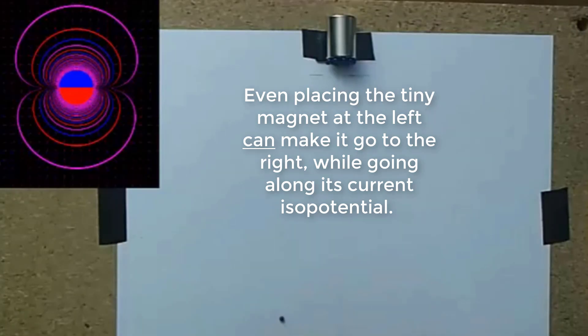Even placing the tiny magnet at the left can make it go to the right while going along its current isopotential.